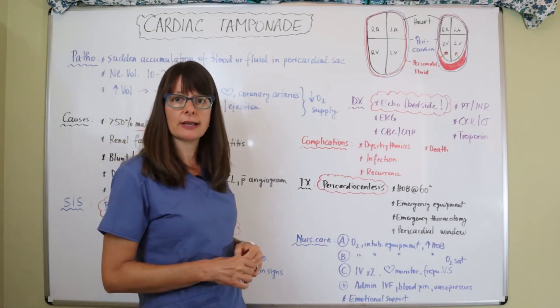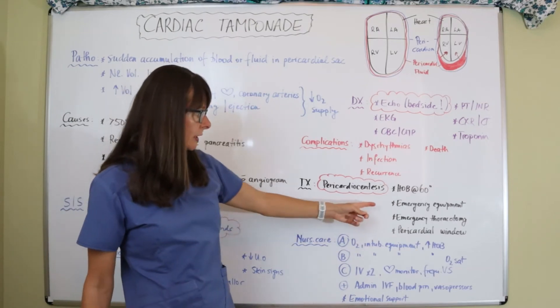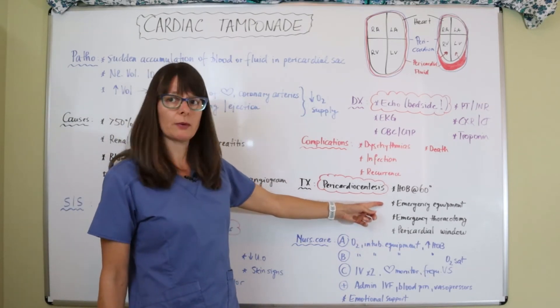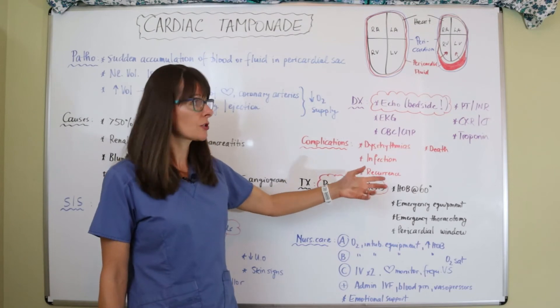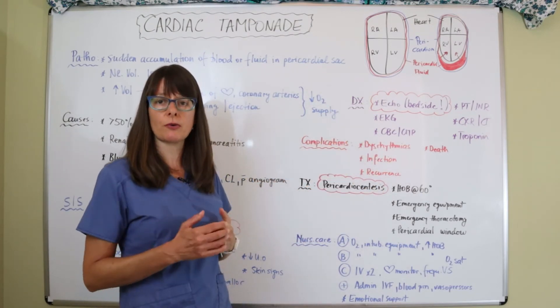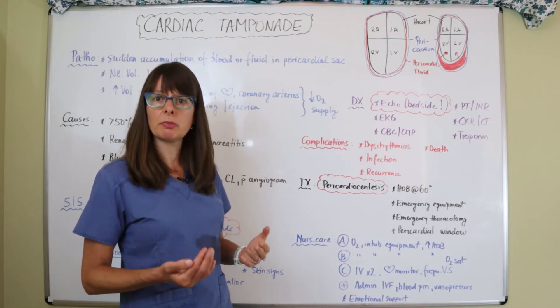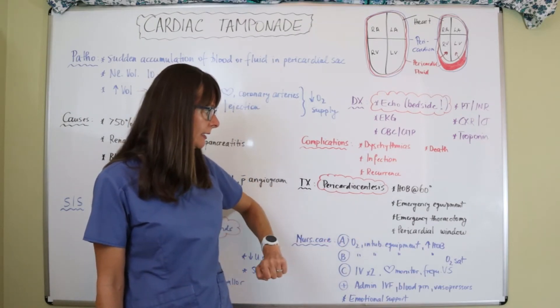Certainly we want to have emergency equipment there at the bedside because first of all this is a needle into the pericardium which can cause complications in itself, such as the heart muscle can be punctured. Maybe the patient is already on the verge of crashing, so they might need to be intubated or defibrillated, so we want to make sure we have our emergency equipment handy.